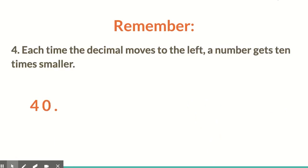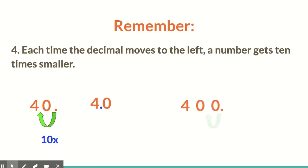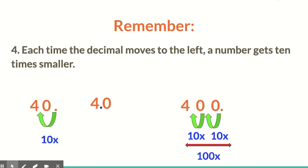And the last one: each time the decimal moves to the left, a number gets 10 times smaller. Say we have the number 40 — our decimal point is at the right, after the ones place. If we move it one time to the left, we get the number 4, which shows us that our number got 10 times smaller. Now say we had 400. If I move that decimal point once, it gets 10 times smaller; twice, another 10 times smaller — the total change is 100 times smaller. Again, 10 times 10, not 10 plus 10. And that's how we go from 400 to 4 by just moving our decimal points.